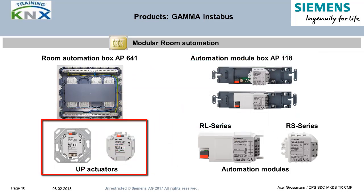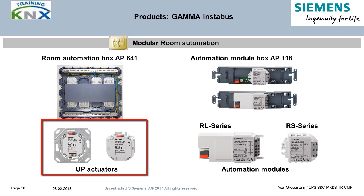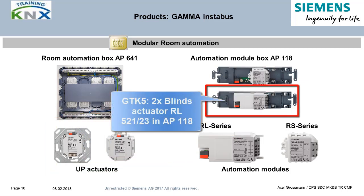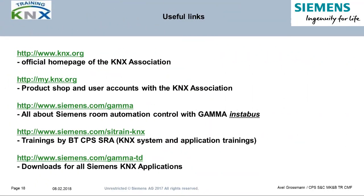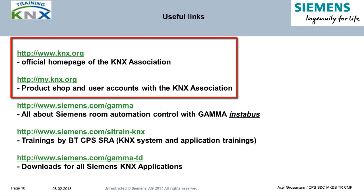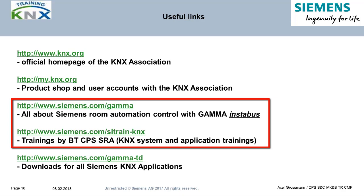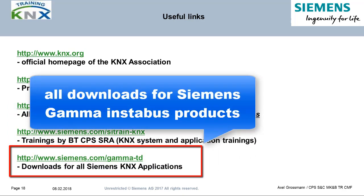The RS components are also additionally available in two flush-mounted versions: one with a BTI (bus transceiver interface) to accommodate user interfaces such as push buttons, and the other neutral for installation in flush-mounted boxes with blind cover. In the GTK5 there are two blind actuators RL521-23, each in an automation box AP118. This picture shows that networking between different components for building automation is possible with the KNX-TP bus as the core.